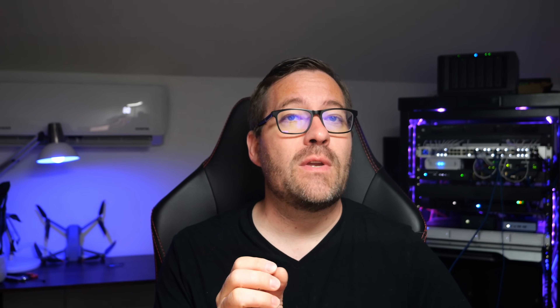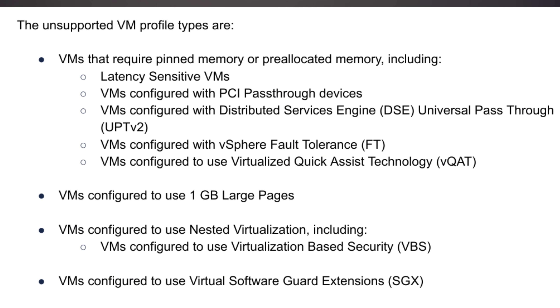For the tech preview, all VM profile types are supported except certain VM types: VMs that require pinned memory or pre-allocated memory, latency-sensitive VMs, VMs configured with PCI pass-through devices, VMs configured with Distributed Services Engine (DSE) or universal pass-through, VMs configured to use virtualized Quick Assist Technology, VMs with 1GB large pages, VMs configured to use nested virtualization — which definitely applies to the home lab — VMs configured to use Virtualization-Based Security (VBS), and VMs configured to use virtual Software Guard Extensions (SGX). There are several VM types and enabled features, like nested virtualization, that you really need to pay attention to and know about.